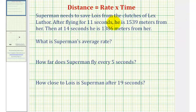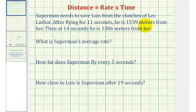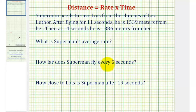Now we'll take a look at an application problem involving the distance equals rate times time formula. Superman needs to save Lois from the clutches of Lex Luthor. After flying 11 seconds, he is 1539 meters from her. Then at 14 seconds, he is 1386 meters from her. We want to know: what is Superman's average rate, how far does Superman fly every five seconds, and how close to Lois is Superman after 19 seconds.